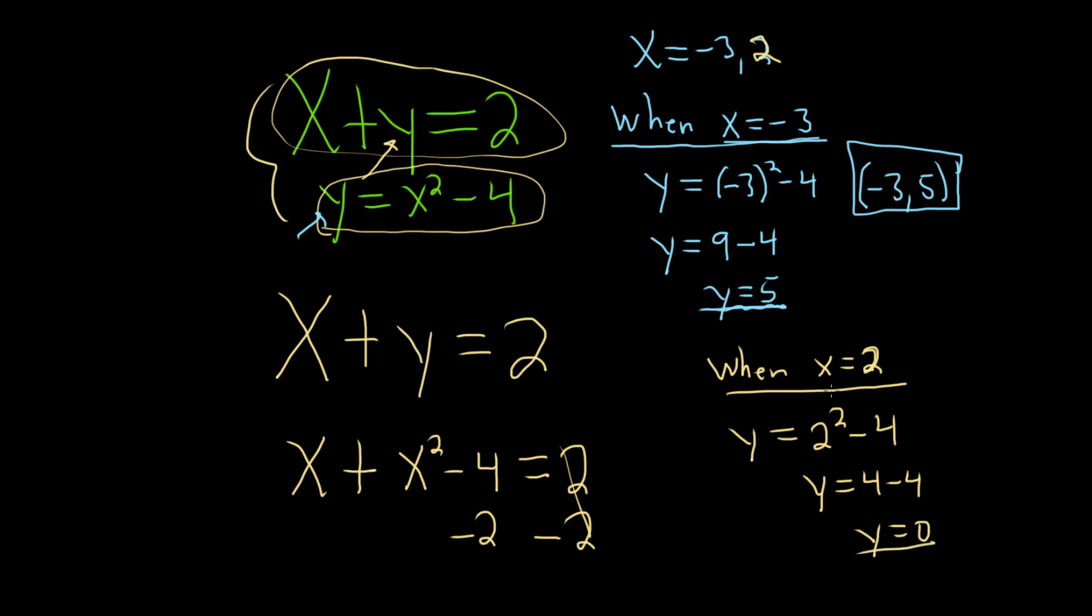So when x is 2, y equals 0. So the other answer would be 2 comma 0. And that's the solution set. Or the solution set would be the set containing these points.